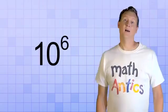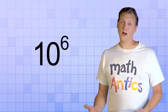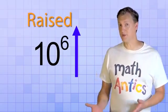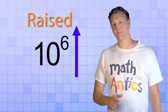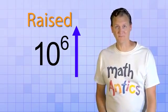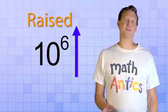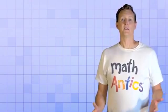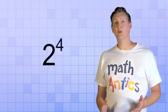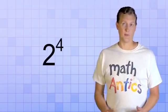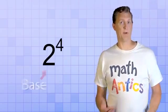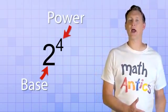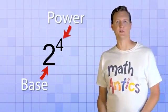Get the idea? You'll often hear people say that a number is raised to a certain power — because it sounds kind of cool. But it's just another way of saying the same thing. So now you know what the two numbers in an exponent mean: the base is the number that gets multiplied, and the power tells you how many times to do it.